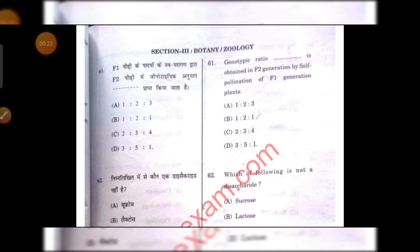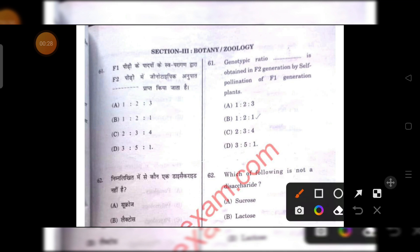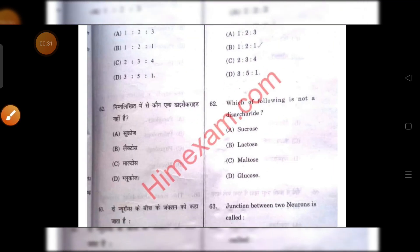The genotypic ratio is obtained in F2 generation by self-pollination of F1 generation. So, 1 is to 2 is to 1 is the right answer.